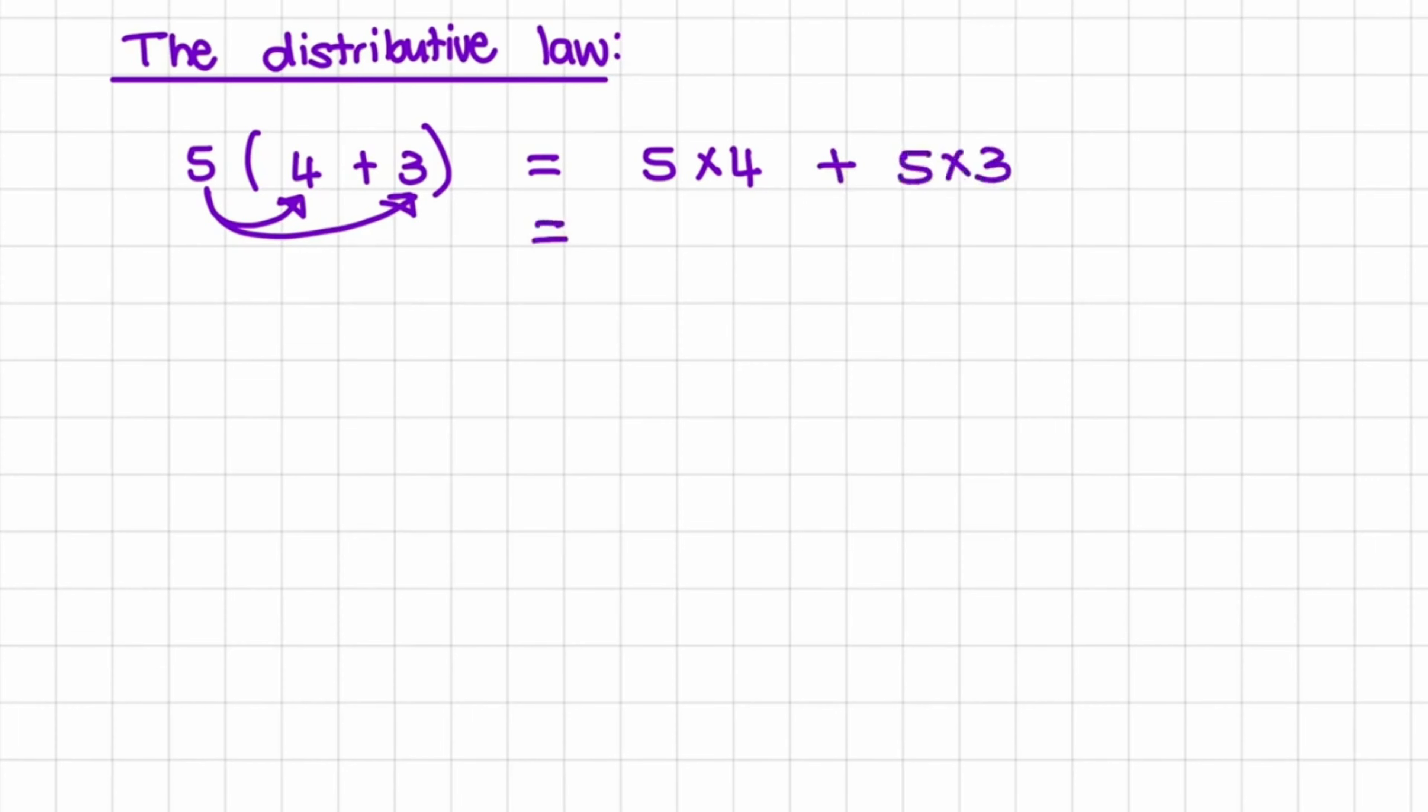So 5 times 4 is equal to 20 and 5 times 3 is equal to 15. And the sum of that is equal to 35. So if you compare that to saying 5 times 7, that is also equal to 35. But this is called the distributive law, where we distribute the multiplication to the numbers on the inside of that bracket.